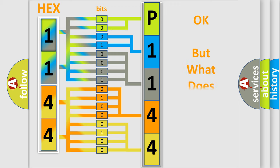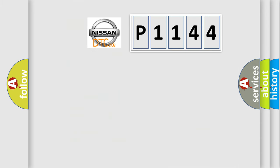We now know how the diagnostic tool translates received information into a more comprehensible format. The number itself does not make sense if we cannot assign meaning to what it actually expresses. So, what does diagnostic trouble code P1144 interpret specifically for Nissan car manufacturers?